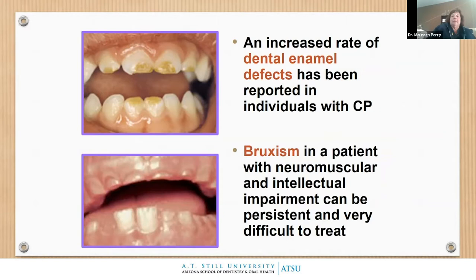We see a lot of enamel defects and lots of bruxism, sometimes in the primary dentition. As children grow older, we often don't see it in the permanent dentition. However, the more impaired an individual is, the more likely they are to continue bruxism into adulthood.